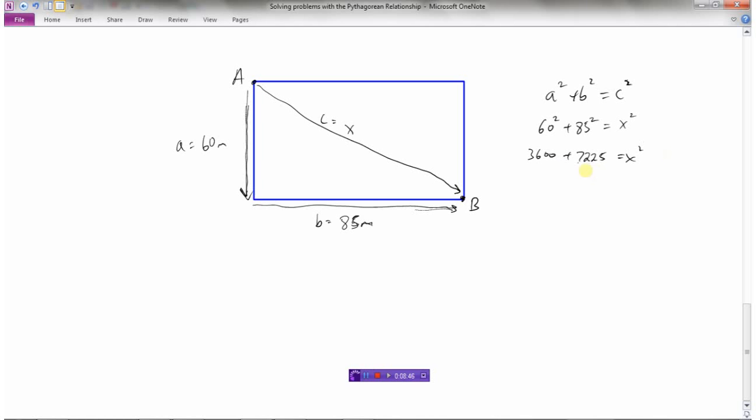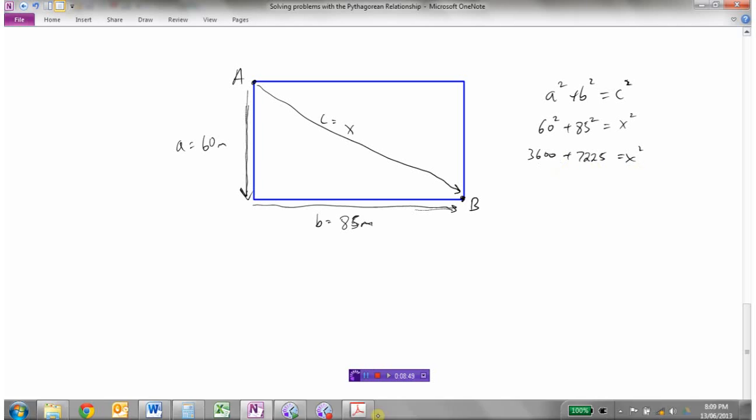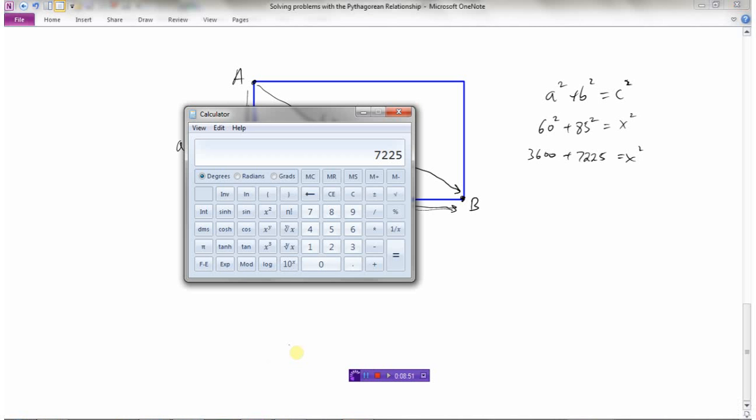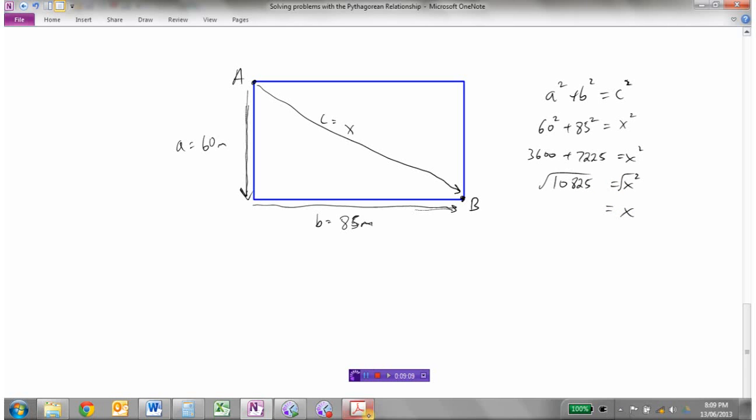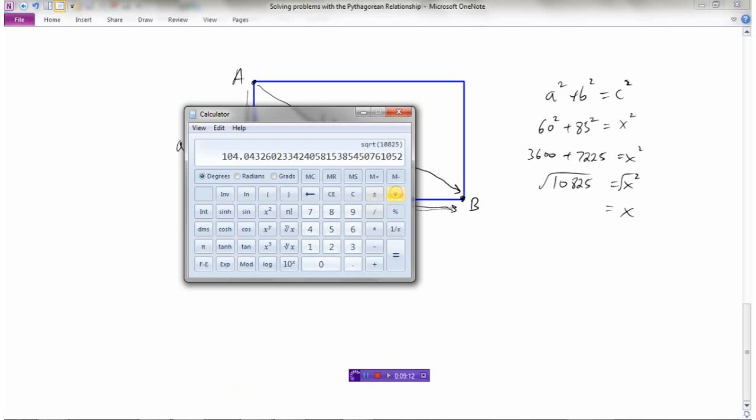And now I need to add these two together because I'm trying to figure out what X squared is. So that plus 3600 is 10,825 equals X squared. And now what I need to do is take the square root of both sides so I can find out what X is. And when I take the square root of this, I get 104 meters.